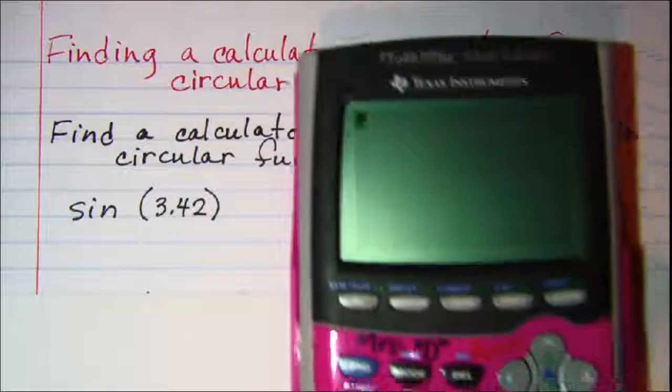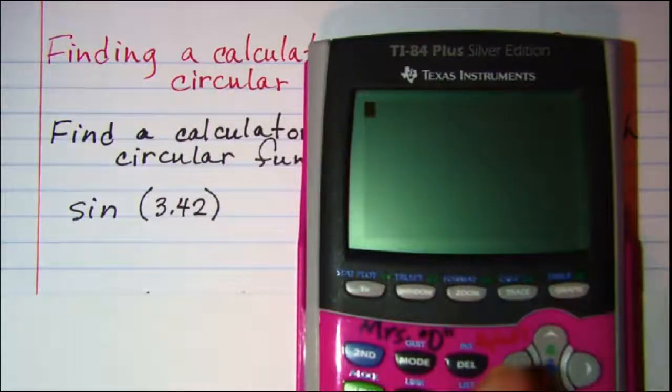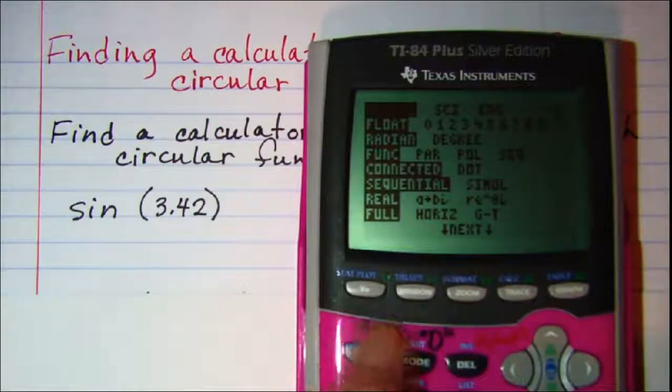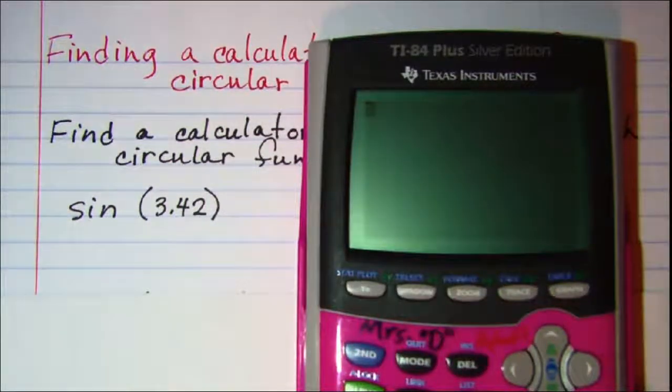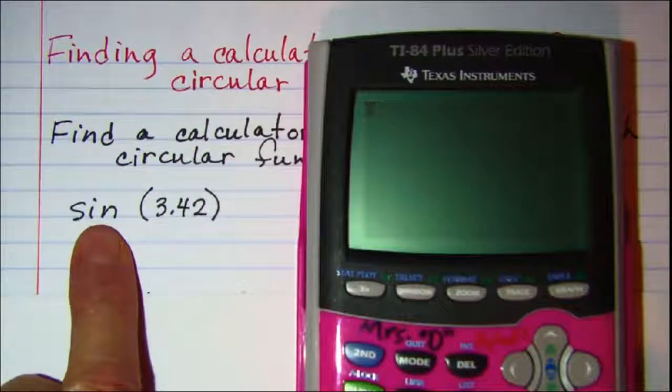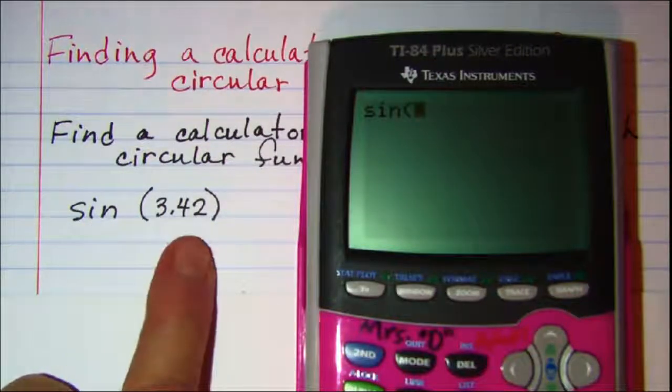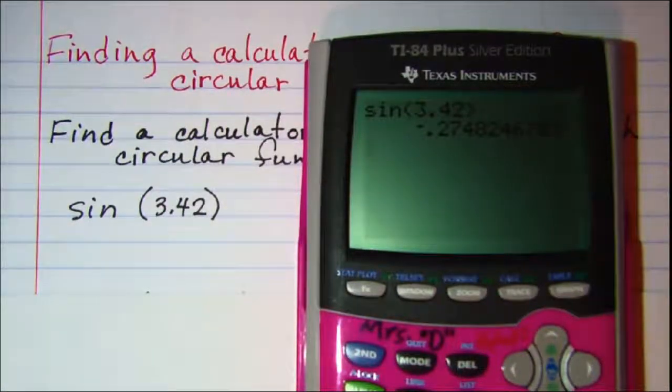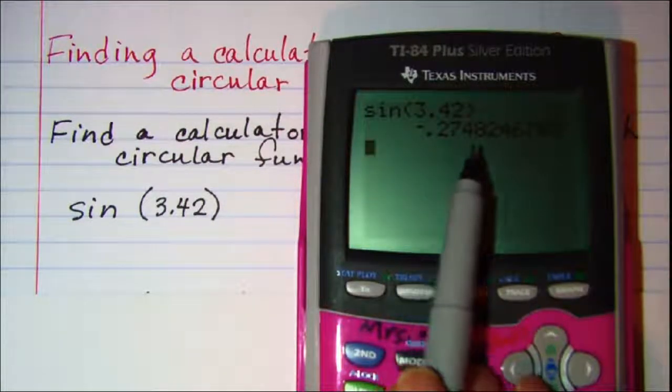So on our calculator we need to check the mode and make sure we're in radians. So we'll quit that and now we want the sine of 3.42 and that just gives us negative 0.2748.